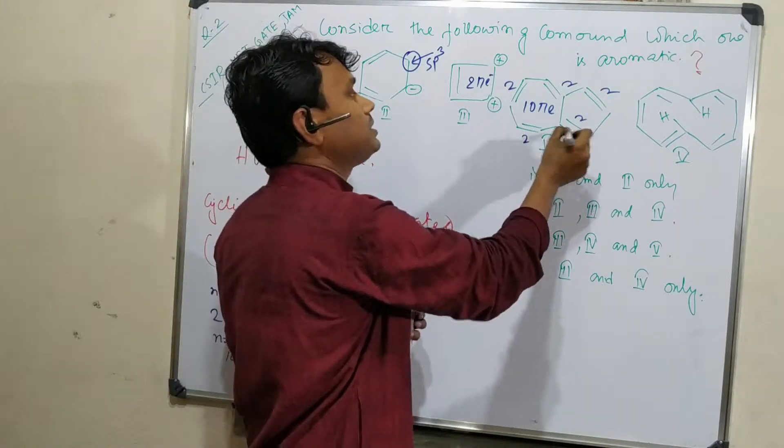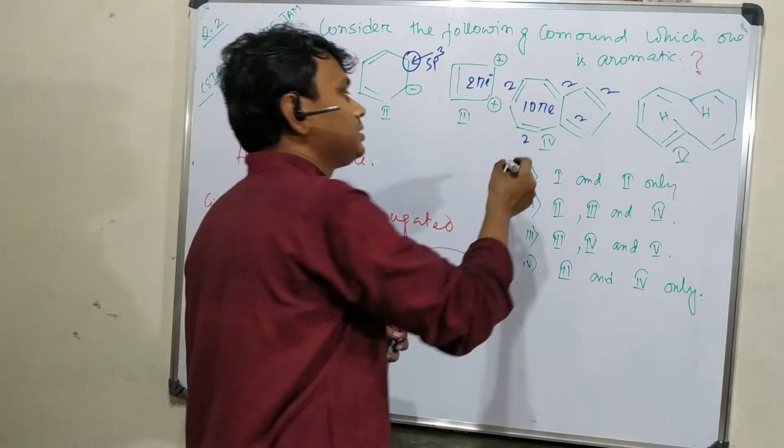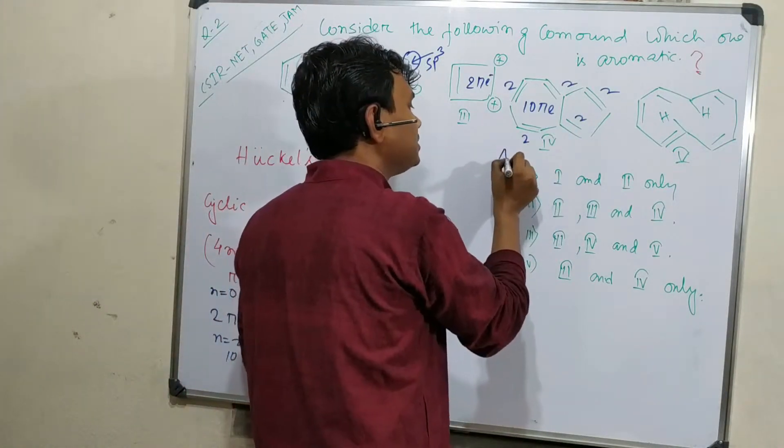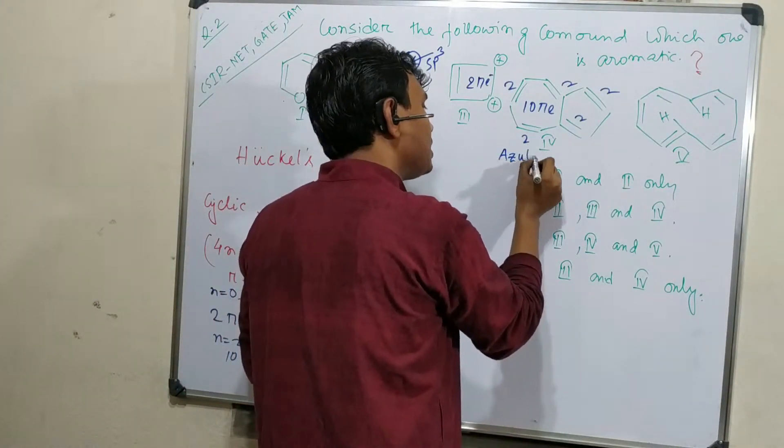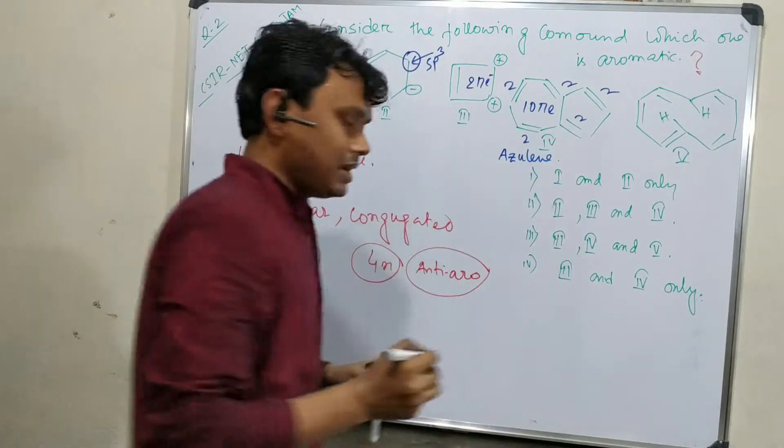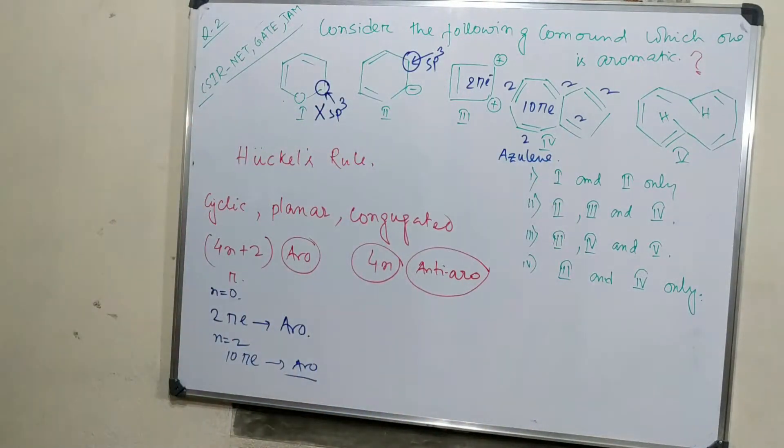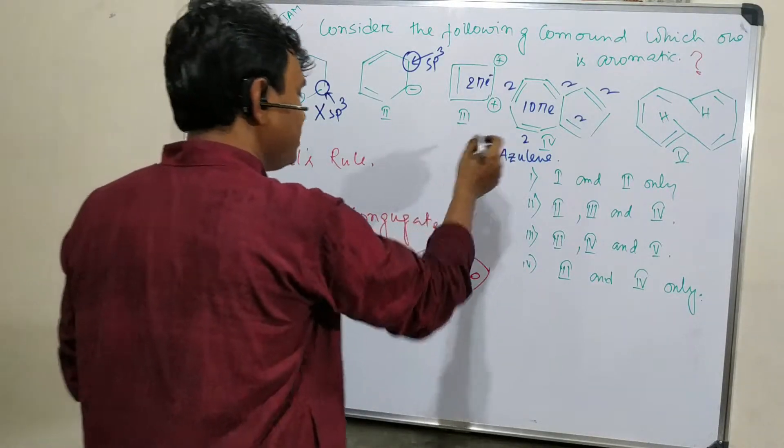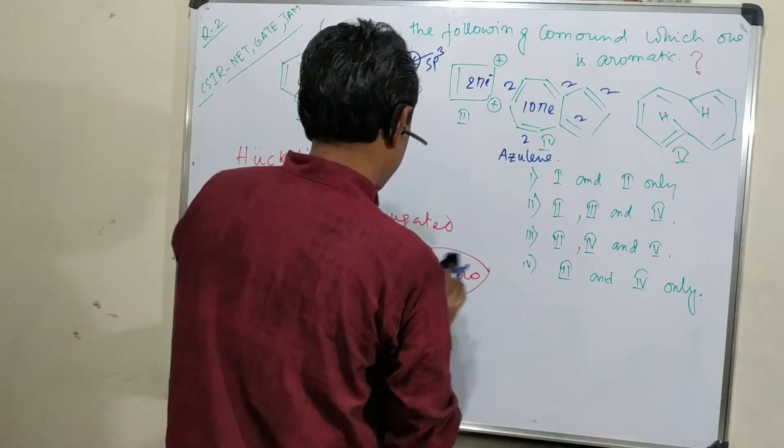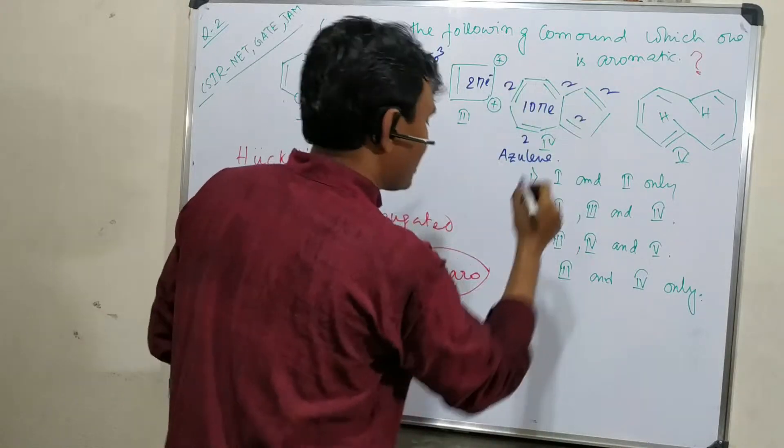Another thing you should remember: this molecule, this is a very famous molecule called azulene. Why is this a very famous molecule? Due to aromaticity, this molecule prefers to remain in charge state.